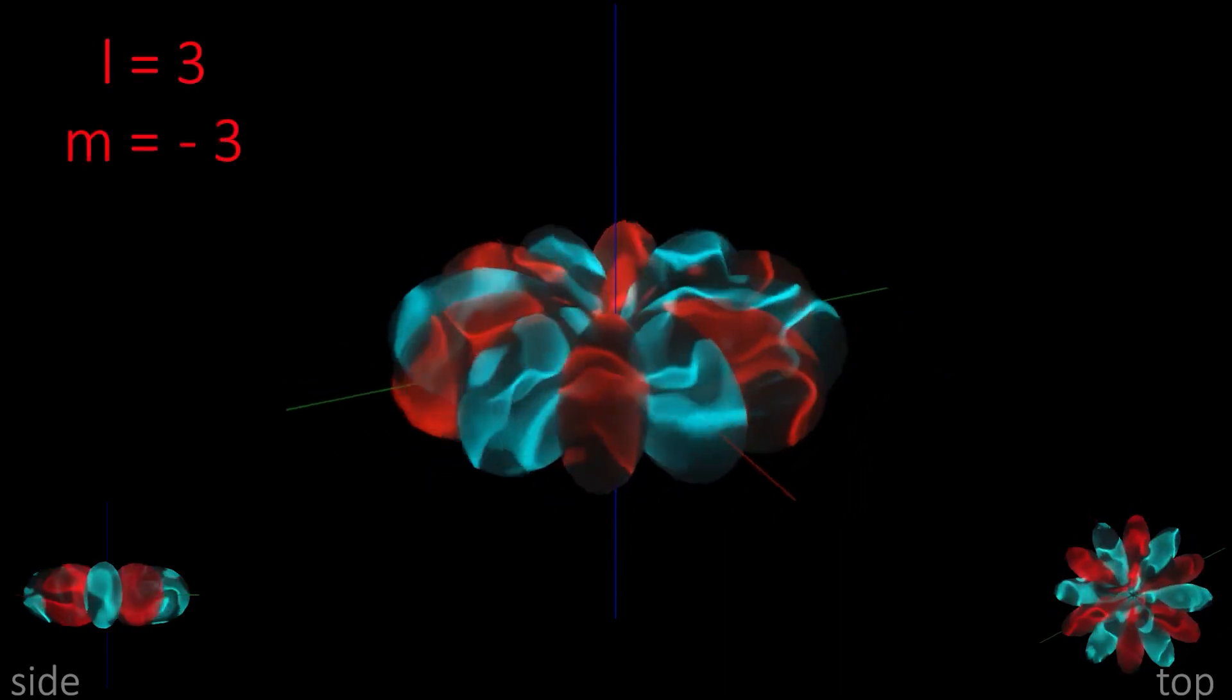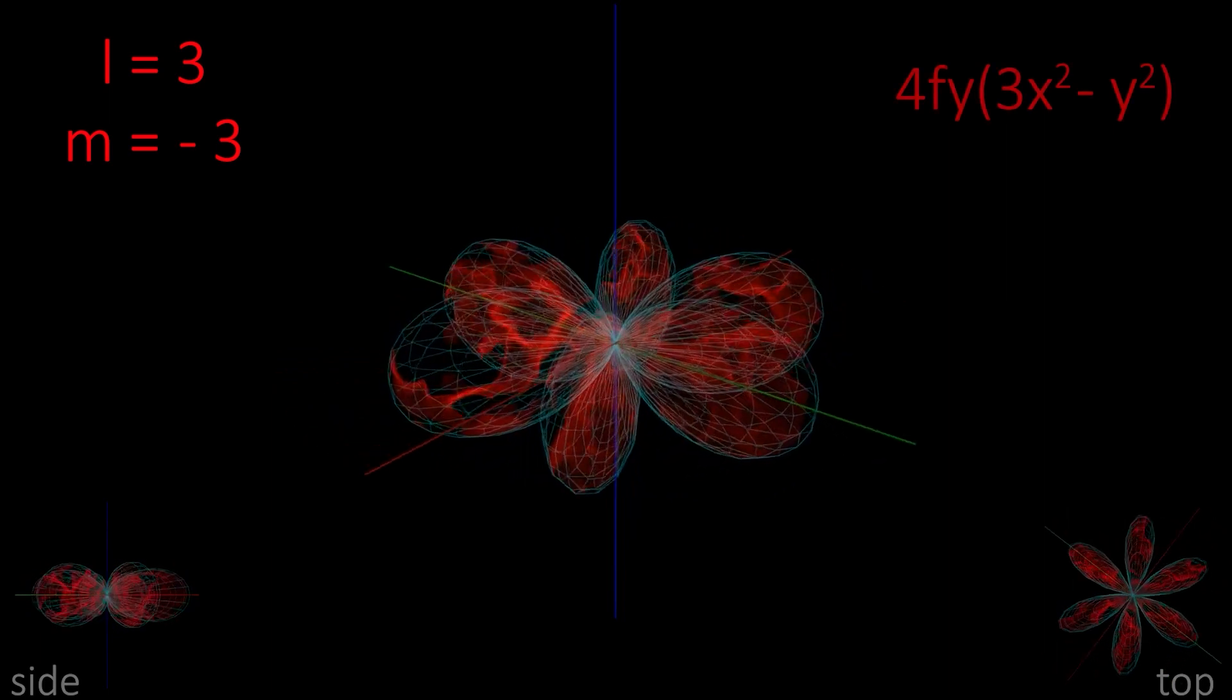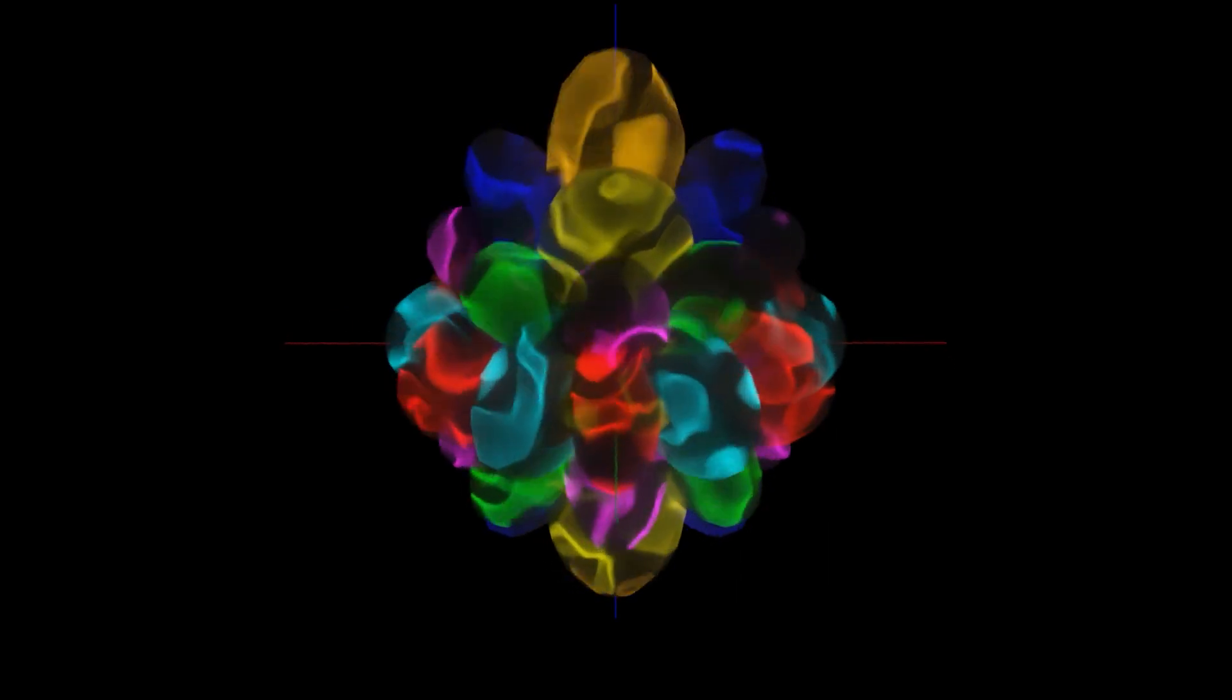M minus 3 has lobes aligned in the y-axis, for fy 3x squared minus y squared. And here's what they look like when they're all together.